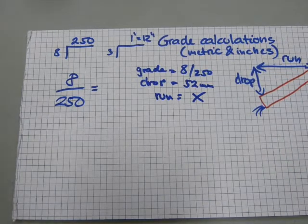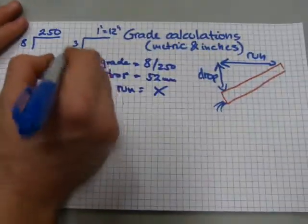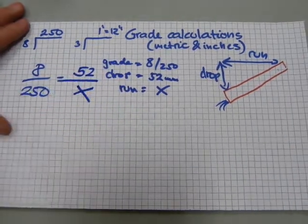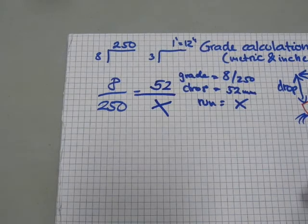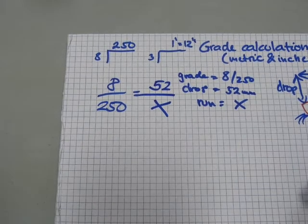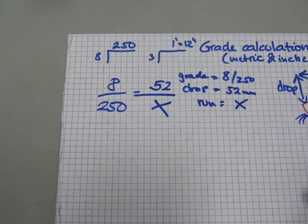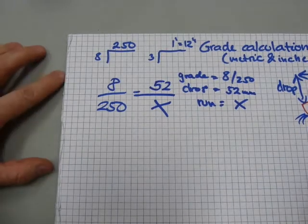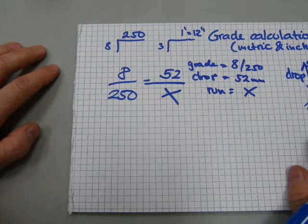Because the drop has to be the numerator, I'm gonna write the drop here and the run goes here. And this is pretty calculable as is, but just to keep your arithmetic, your number crunching the same consistently, I'm gonna flip this.